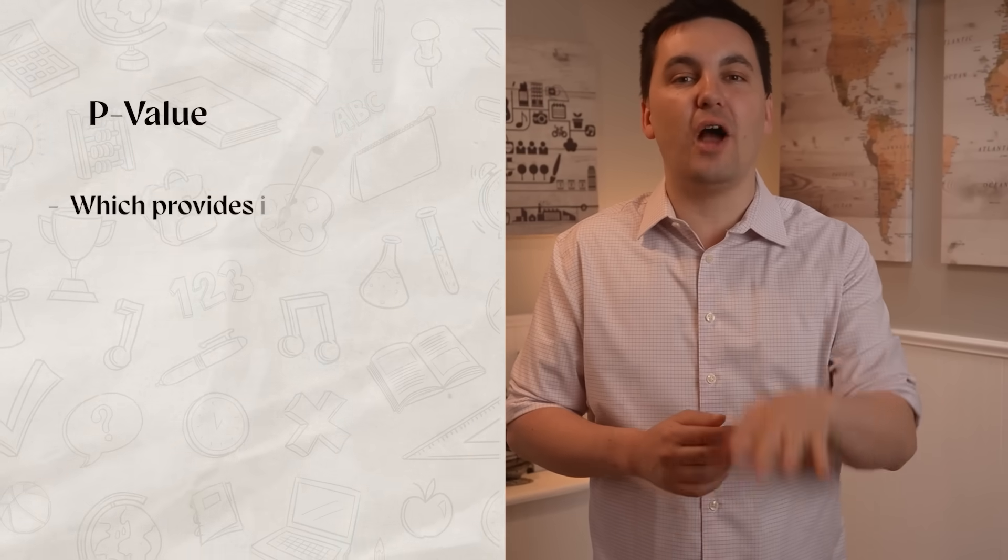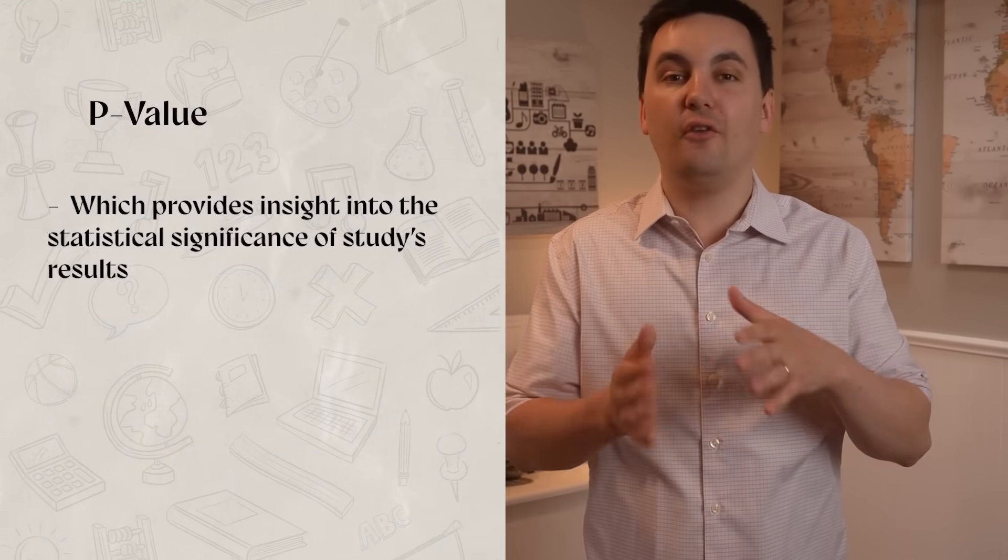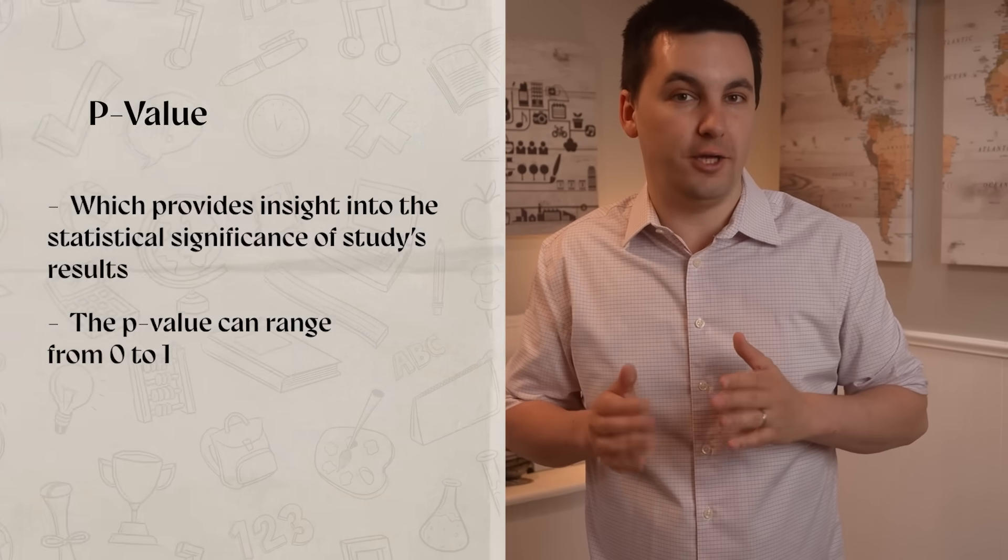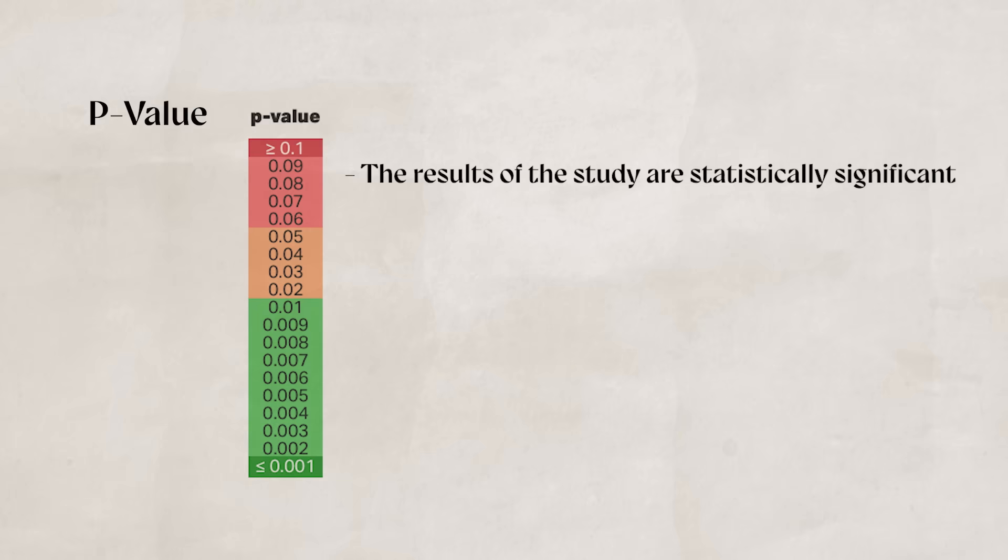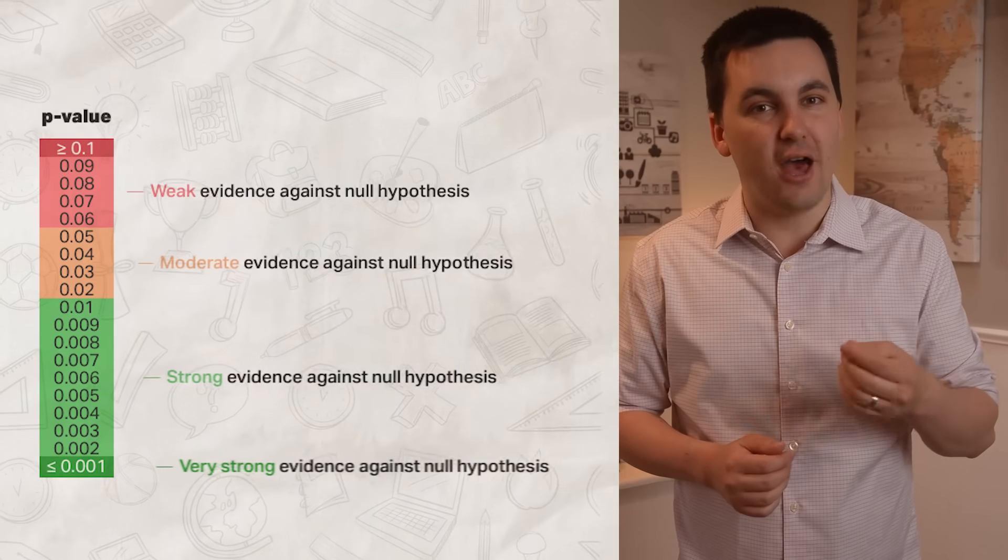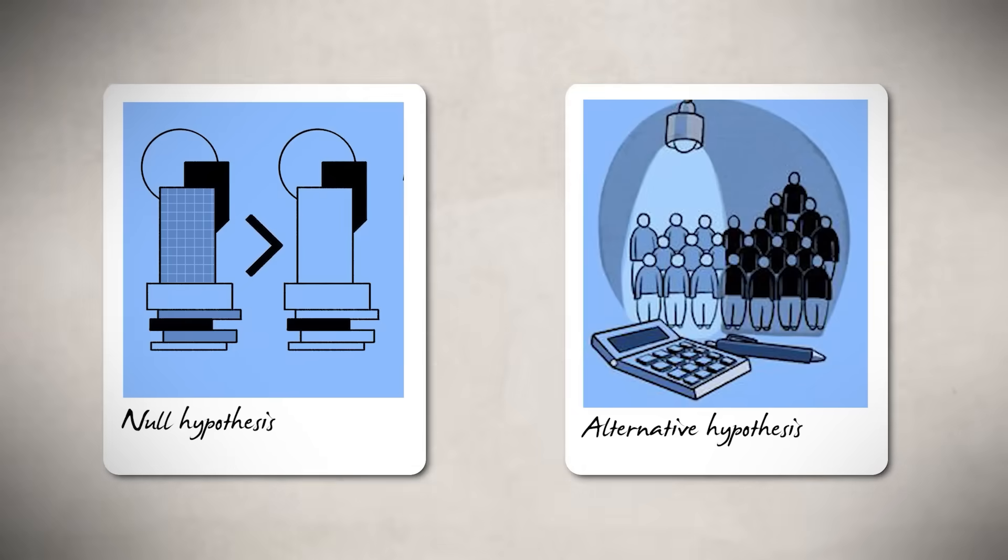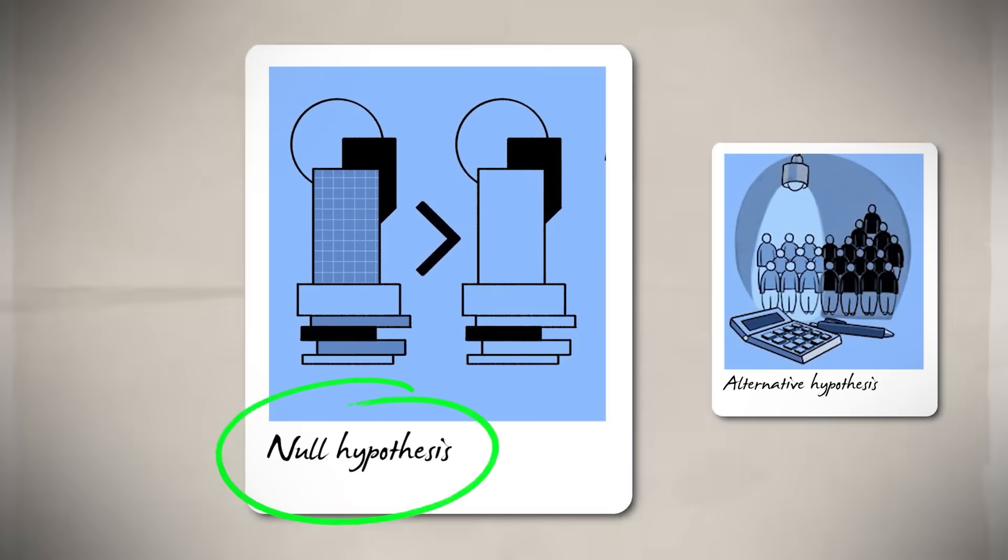Up next, we have p-value, which provides insight into the statistical significance of a study's results. The p-value can range anywhere from zero to one. If a p-value is less than or equal to 0.05, the results of the study are statistically significant, which means that the results of the study were most likely not caused by chance or luck. The smaller the p-value, the stronger the evidence is against the null hypothesis. While on the other hand, the larger the p-value, the more likely it is that the results of the experiment were due to chance. For instance, a p-value of 0.90 would mean there's a 90% chance that the results were due to luck. For the AP test, you don't need to worry about calculating the p-value, but you do want to make sure that you are familiar with statistical significance.